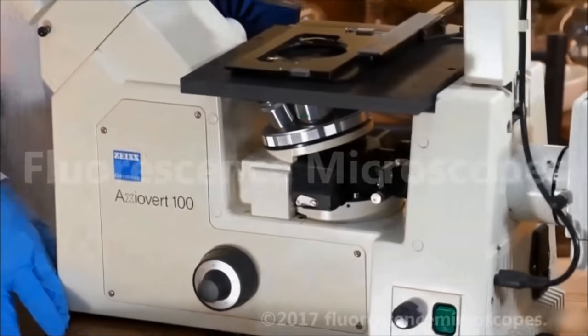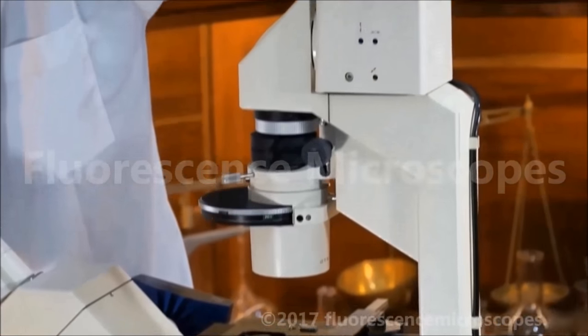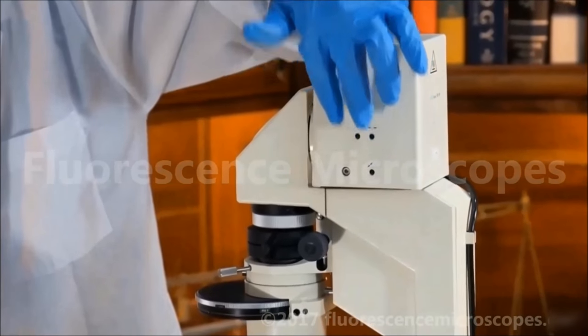The halogen also has some centering knobs. You can insert a 3-millimeter hex and adjust the centering screws.